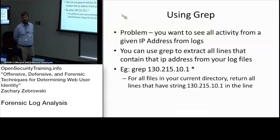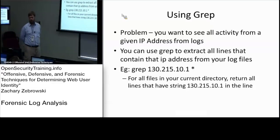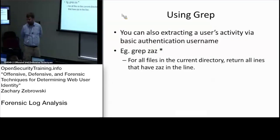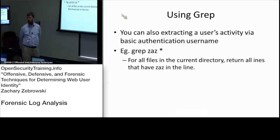The only thing you have to be careful of when using grep is to make sure that if your server IP address is 130.215.10.1, you may want to put it into a database instead of searching for all the activity on that web server — just the activity where that IP address is a client instead of a server. If you have basic authentication, you may also be able to search for the user's name. Use grep to search for everything looking like a username, and do a star to search for all the files.